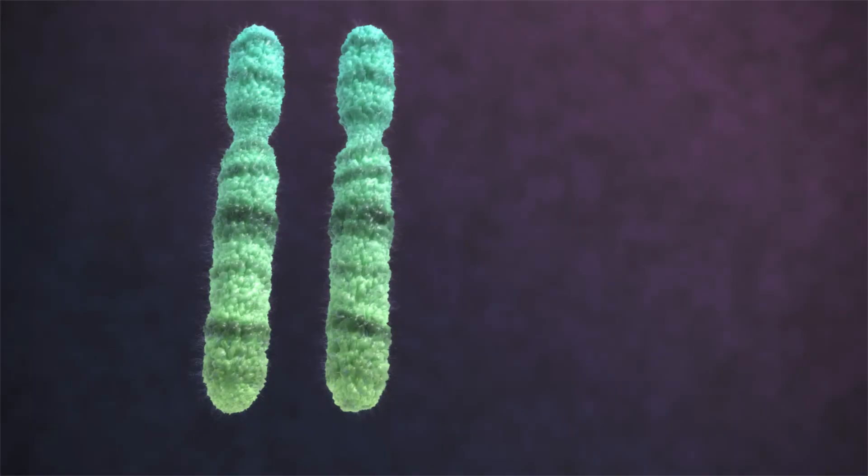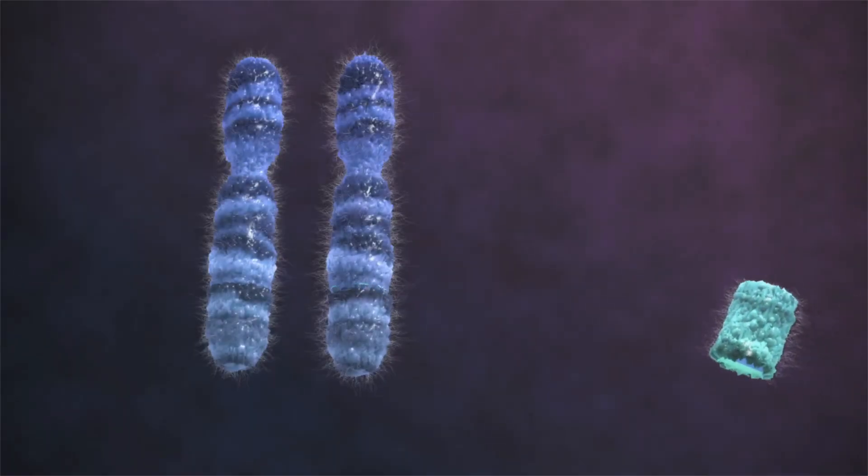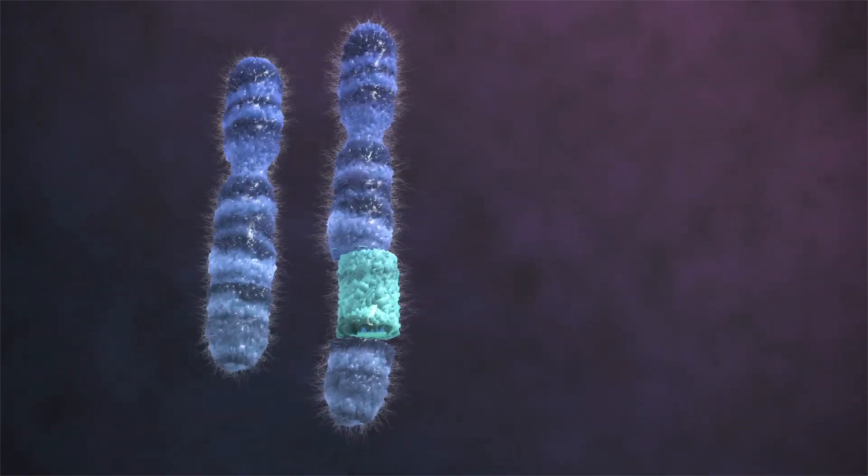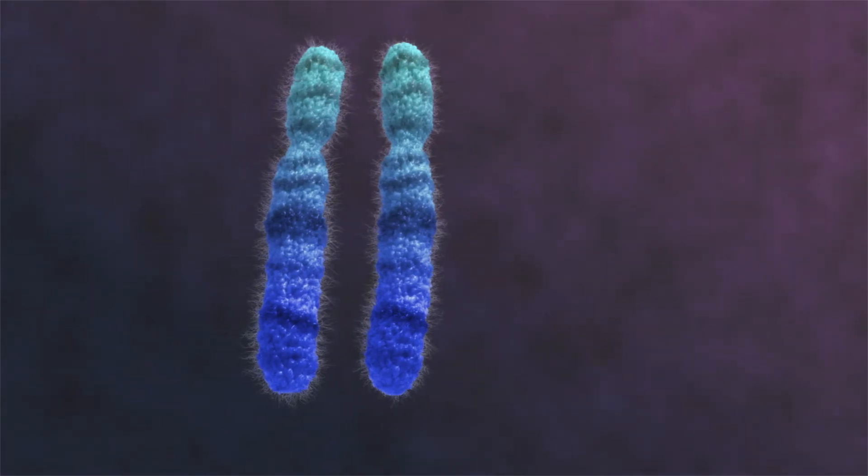Others involve part of the chromosome breaking off. This is known as a deletion. Or they may gain an extra piece of chromosome. Some pairs even gain a whole chromosome. This is common in myeloma and is known as hyperdiploidy.